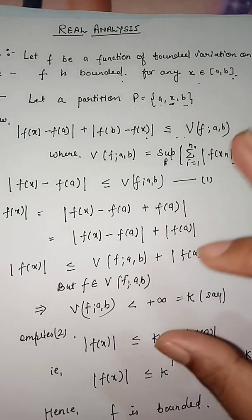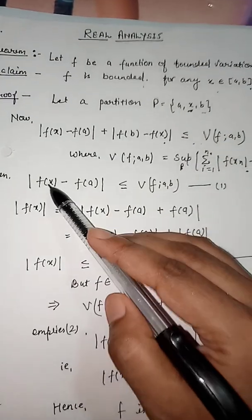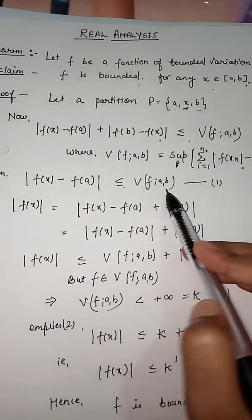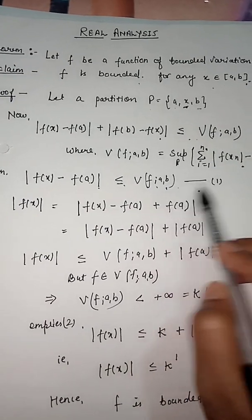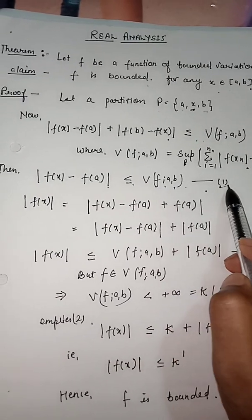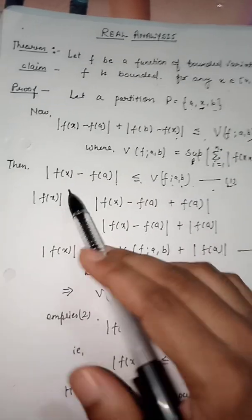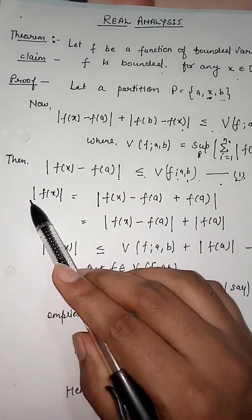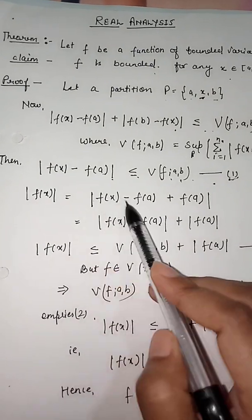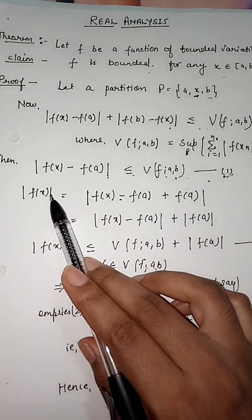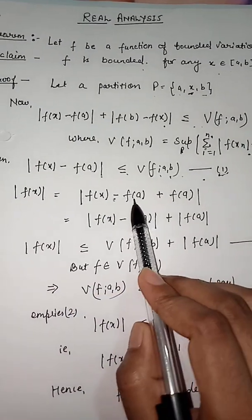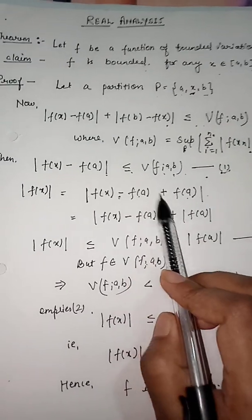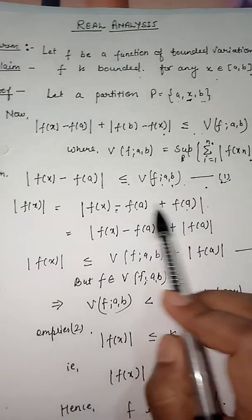From the key condition, |f(x) - f(a)| ≤ V_a^b(f). Now to bound |f(x)|, we write: |f(x)| = |f(x) - f(a) + f(a)|, by adding and subtracting f(a). So we can write |f(x)| as |f(x) - f(a) + f(a)|.